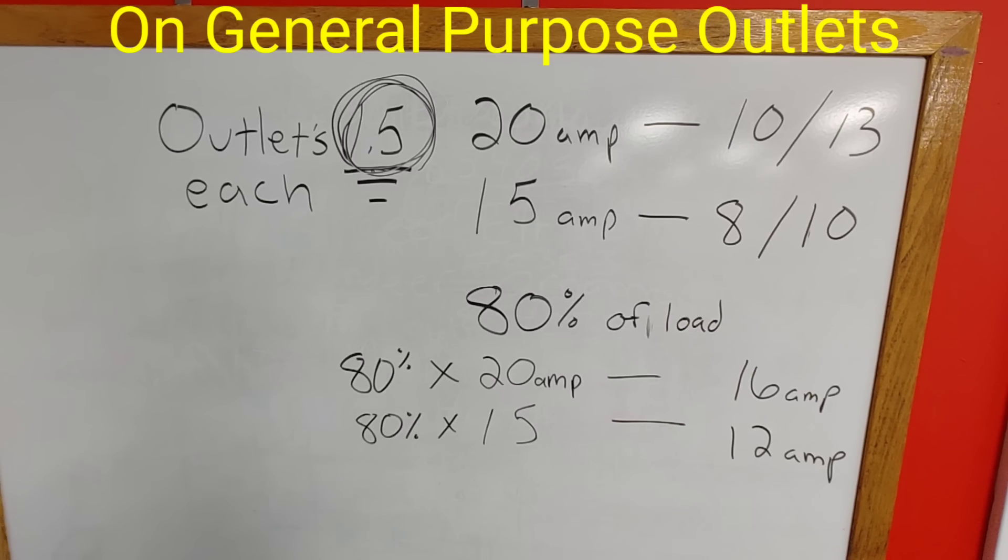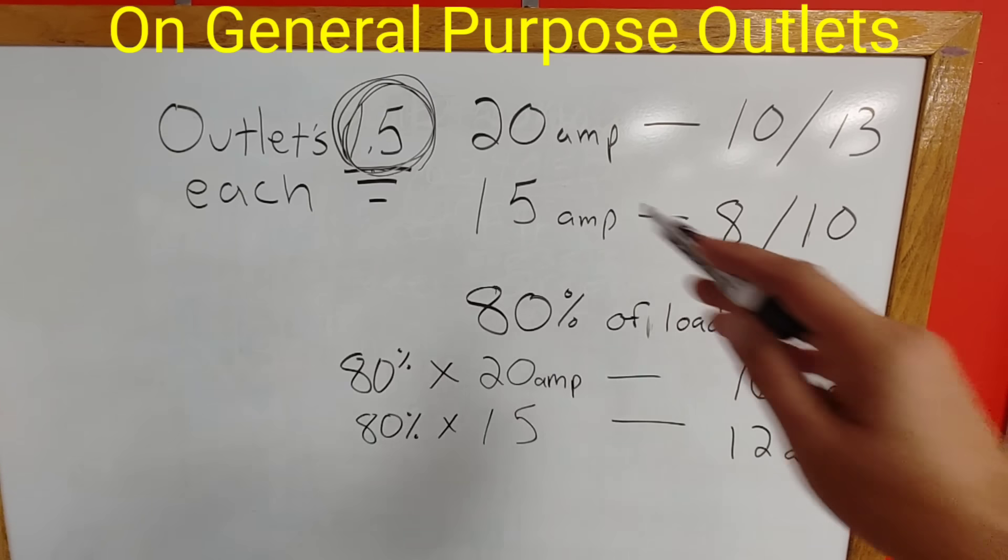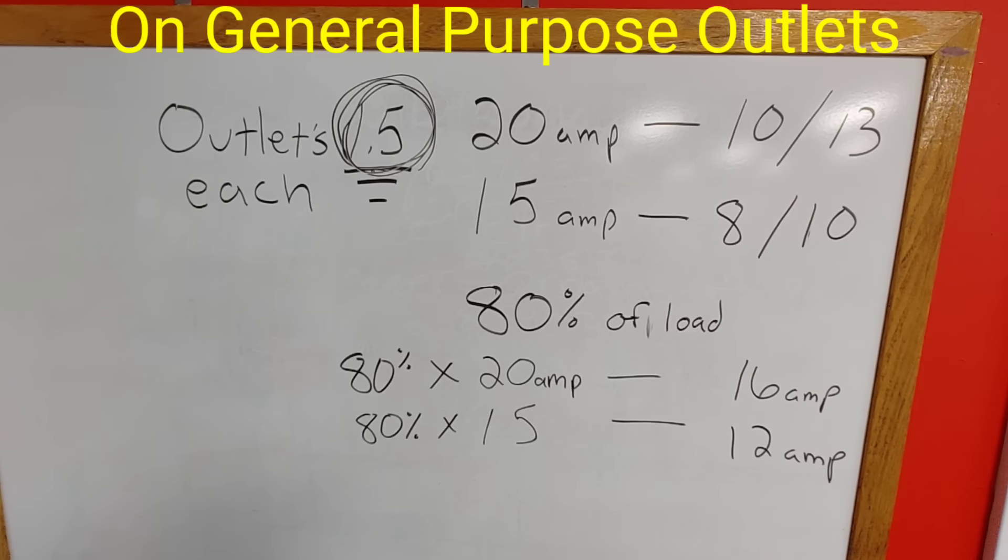Now with that being said, if you have 1.5 amps per outlet and you have a 20 amp circuit, you can actually put 13 outlets on that circuit. And then again, if you have 1.5 amps per outlet on a 15 amp circuit, you can actually put 10 outlets on that circuit. And that is kind of the number that most people will go with.